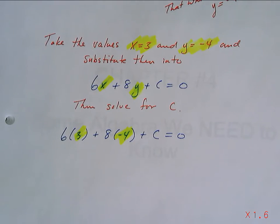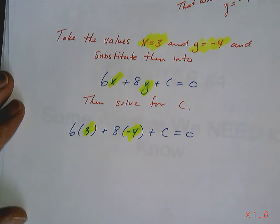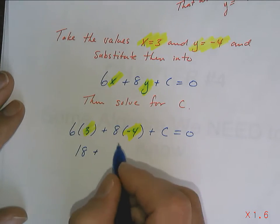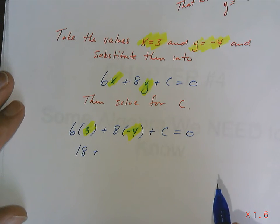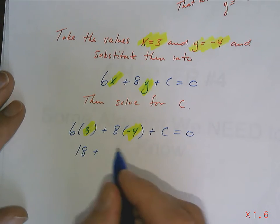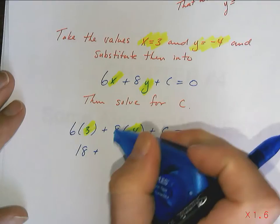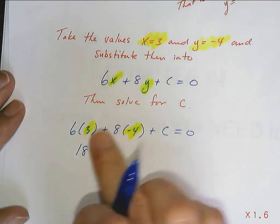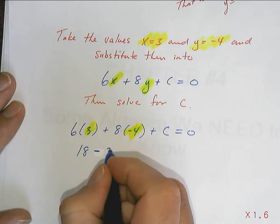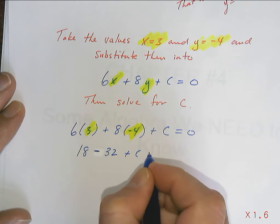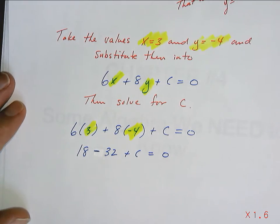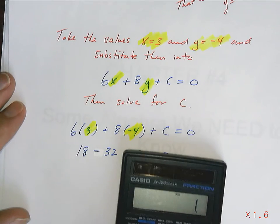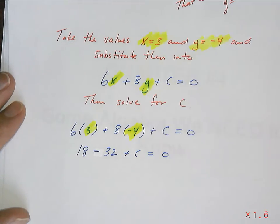Well, now I have a simple equation. 6 times 3 is 18. 8 times 4 should be 16, 32. So it's negative 32 because it's a positive times negative. 18 minus 32, negative 14.